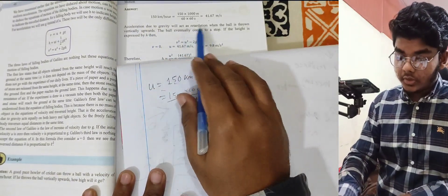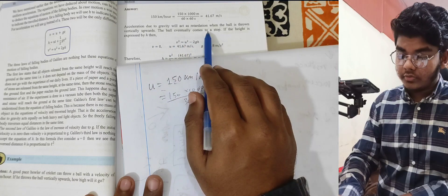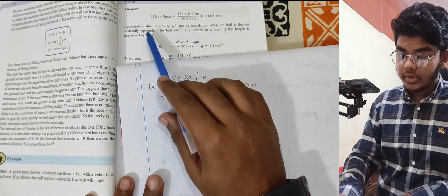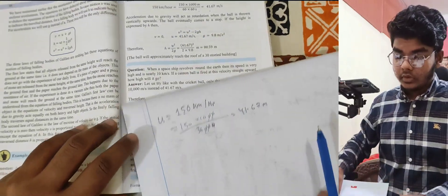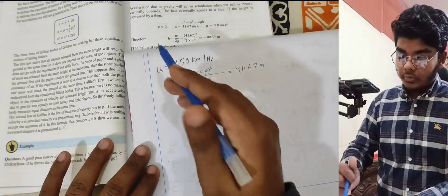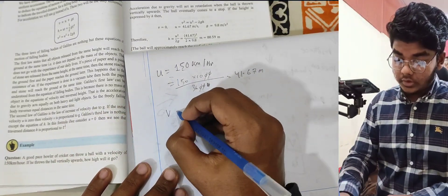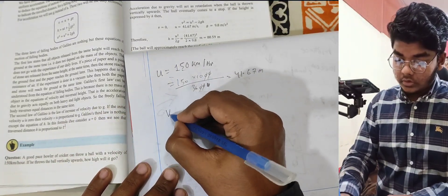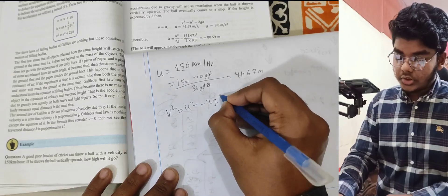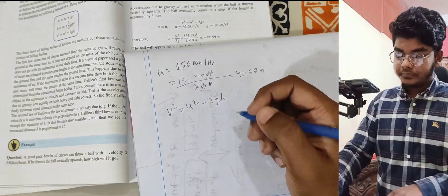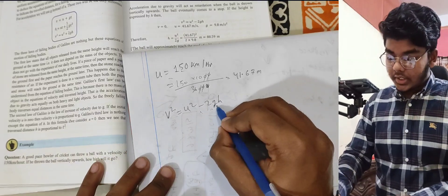Acceleration due to gravity acts as retardation when the ball is thrown vertically upwards, because the ball eventually comes to a stop. Let the maximum height be h. We use the equation: v² = u² − 2gh.